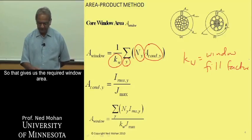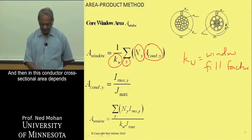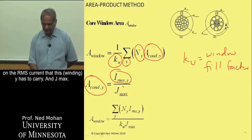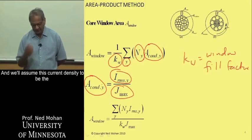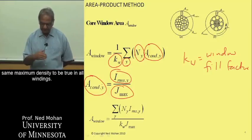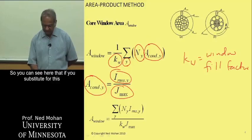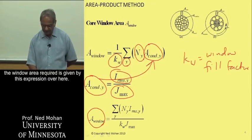That gives us the required window area. The conductor cross-sectional area depends upon the RMS current that winding Y has to carry and Jmax. Assuming the same maximum current density applies in all windings, substituting for the conductor cross-sectional area, the required window area is given by that expression.